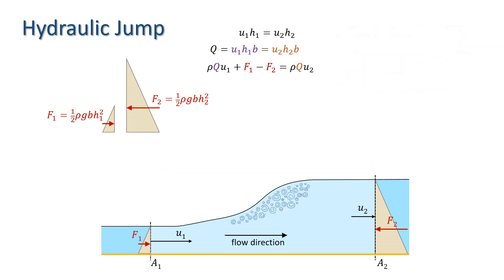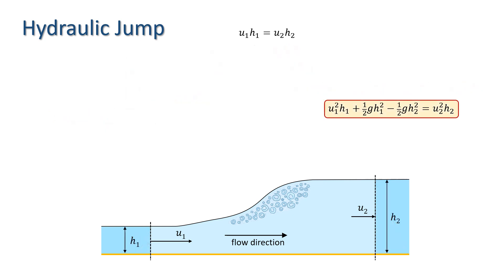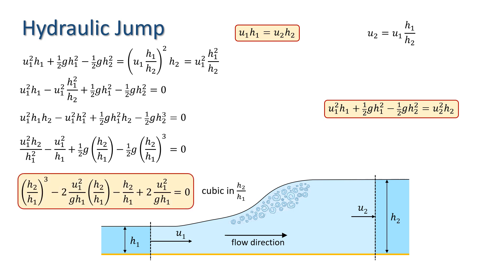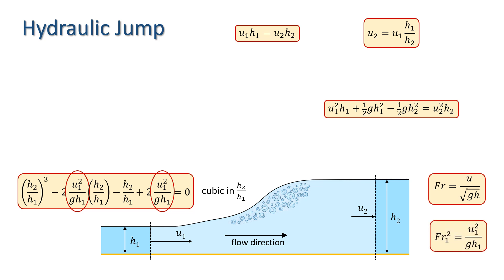Substituting for Q, F1, and F2 in the momentum equation and dividing throughout by rho and b gives: U1²·H1 plus one-half·g·H1² minus one-half·g·H2² equals U2²·H2. We also know that U1·H1 equals U2·H2, giving us U2 equals U1·H1 over H2. This allows us to eliminate U2 from our equation. After rearranging and tidying up, we obtain a cubic in H2/H1. Reminding ourselves of the definition of the Froude number, we can see that U1² over g·H1 can be written as the square of the Froude number at cross section 1, Fr1².